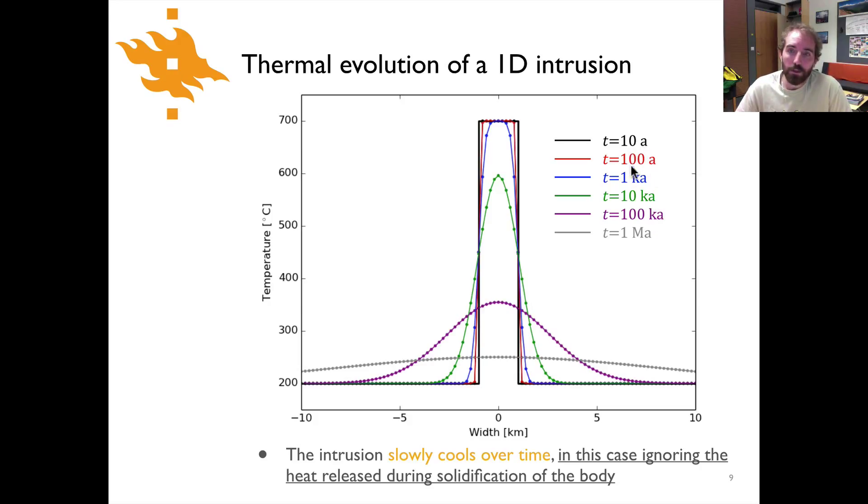And so that is what is shown here. Each of the different colored lines corresponds to a different time from 10 years shown in black to 1 million years shown in gray. What you can see is that this intrusion is going to slowly cool and we're making a bit of a simplification. We're going to ignore the heat release during solidification. It is in place as a fluid that is going to crystallize, but we'll ignore that for now.